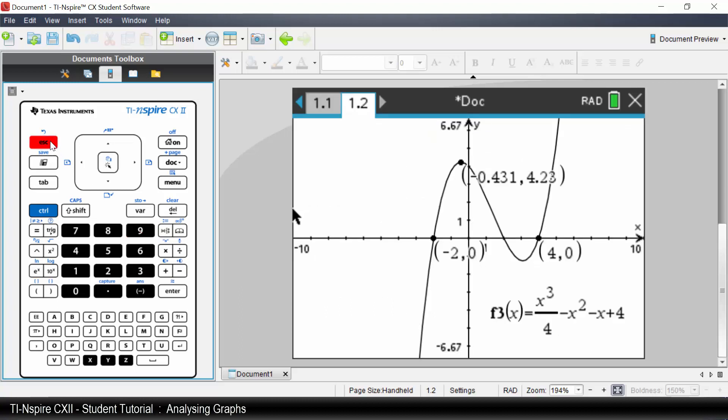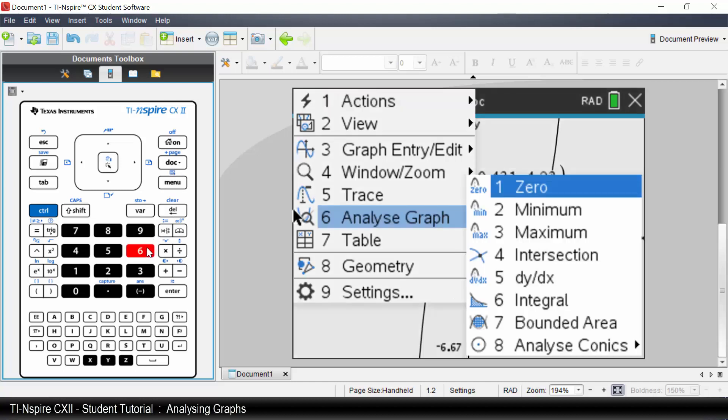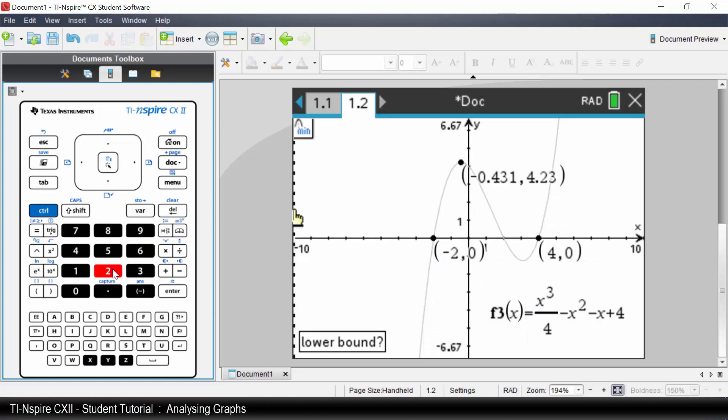A question could be determine the minimum value for the domain from x from 0 to 2.5. Press Menu. Select Analyze Graph. Select Minimum. 0. Enter. 2.5. Enter. And the minimum value for the domain is shown on the screen.